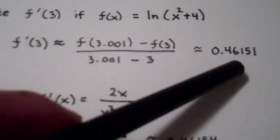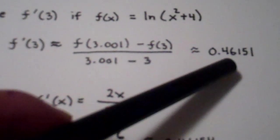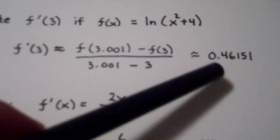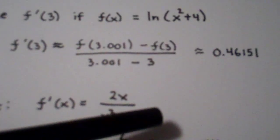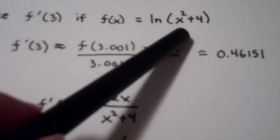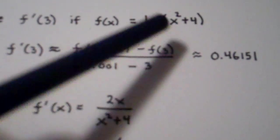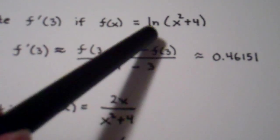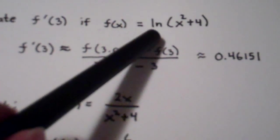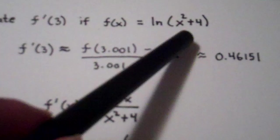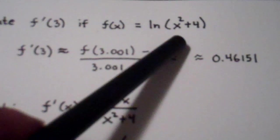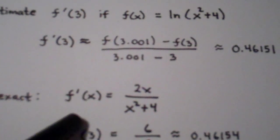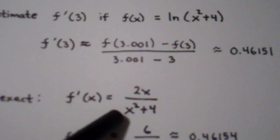Now, that's an estimation of the derivative at 3.001, just an estimation. So if we want to find the exact value of the derivative, well, this is a function that we know how to differentiate. It's a very easy function to differentiate. To take the derivative of a natural log, we just take the derivative of the argument divided by the argument itself. So f'(x) is actually very easy to calculate here. It's going to be 2x over (x² + 4).